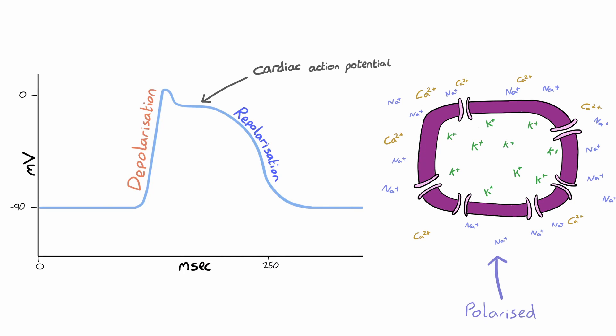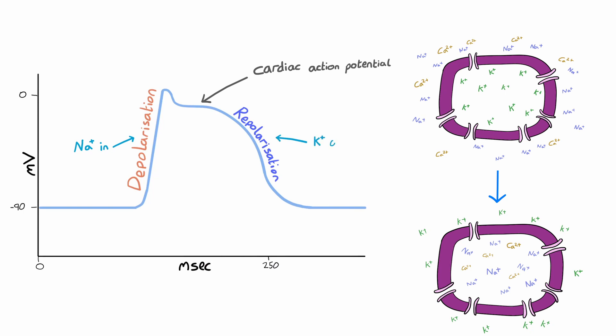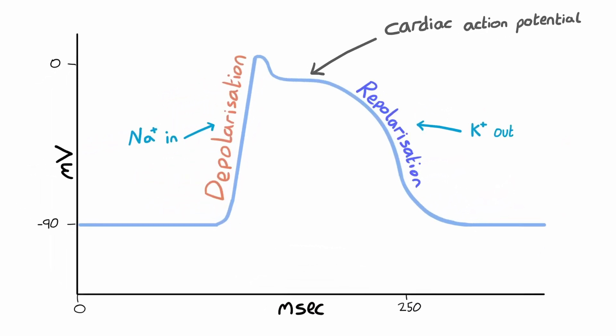You can think of an action potential as a temporary reversal of the charge across the membrane as there will be an influx of sodium from outside the cell which depolarizes the membrane towards neutral charge. This is then followed by repolarization which is controlled by potassium moving out of the myocytes. The myocyte will then be reset by ion transporters for another round of depolarization. It is this depolarization event that triggers contraction of the myocardium.